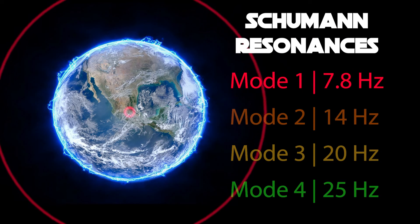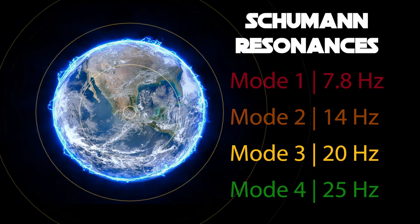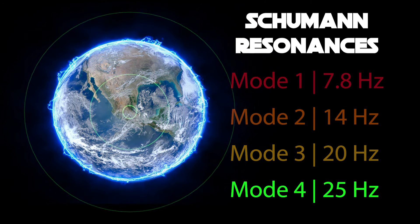The Schumann Resonances are electromagnetic standing waves that exist at different frequencies. To understand what that means, let's break it down into basic physics, starting with the electromagnetic force.